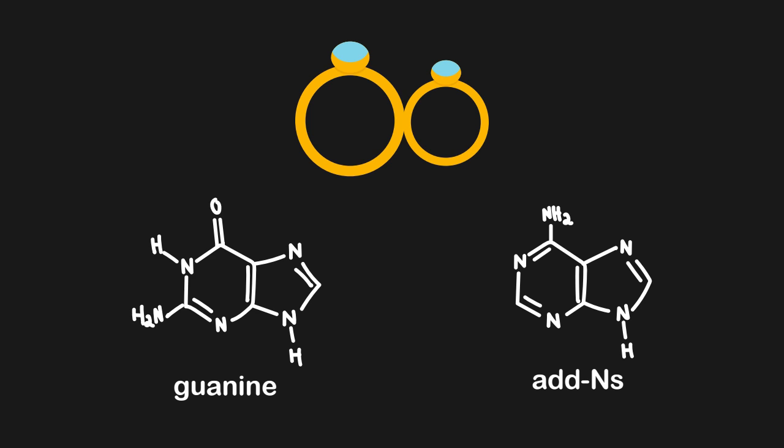Now that we see we have two-ring structures for both guanine and adenine, how can we decide between the two? If you notice, I wrote adenine as 'ADNs.' This is really important because if we look at its structure, it has nothing but nitrogens in addition to its carbons. This is different than guanine, which has a carbonyl. So if you see only N's in the structure of a purine, you know it's adenine. By process of elimination, if you see a carbonyl, it has to be guanine.